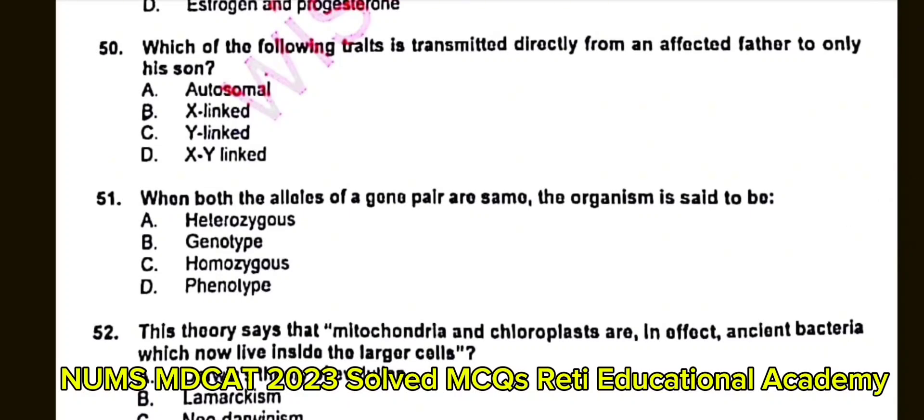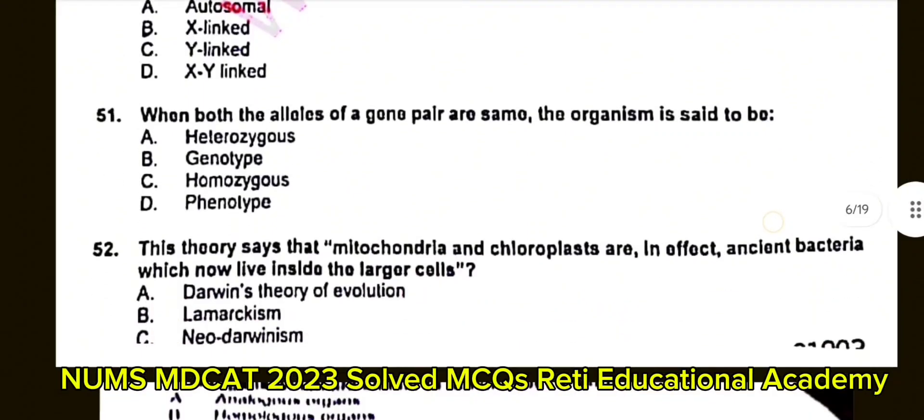Question number 51: When both alleles of a gene pair are the same, the organism is said to be? A. Heterozygous. B. Genotype. C. Homozygous. D. Phenotype. The correct answer is C: Homozygous.